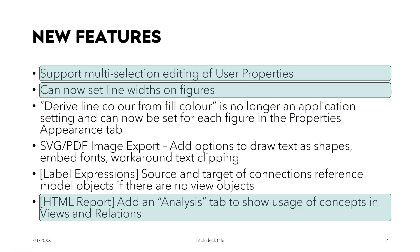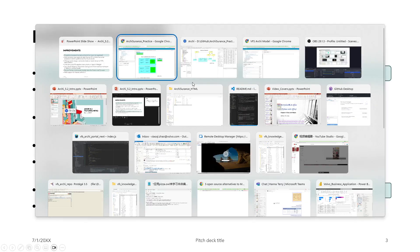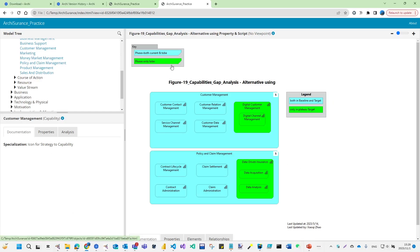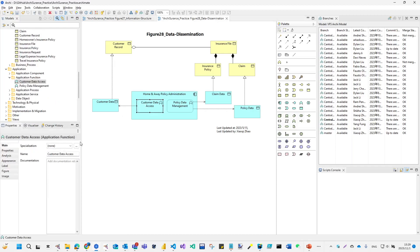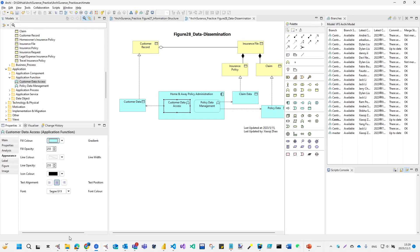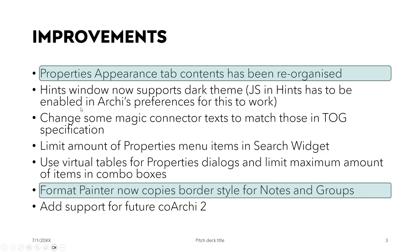There are also improvements to existing features. First is the property appearance tab, which has a better layout. If I come here, you can see from the element properties — on the appearance section — there is a better view with improved layout and some hints. Windows now also supports dark mode, among several other minor improvements.